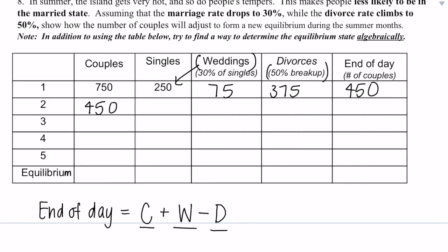And if we subtract this from 1,000, which is the amount that we have total, we get 550. And so it just follows this same pattern. So 30% of 550 is 165. 50% of 450 is 225. And our total couples at the end here is 390. And I'll go ahead and fill in the rest of the chart.